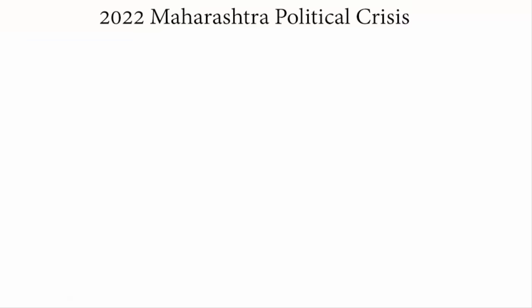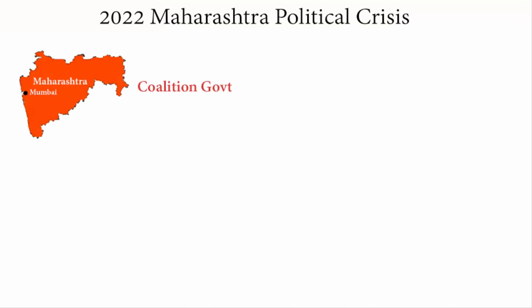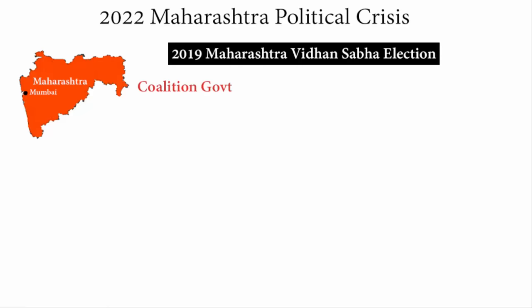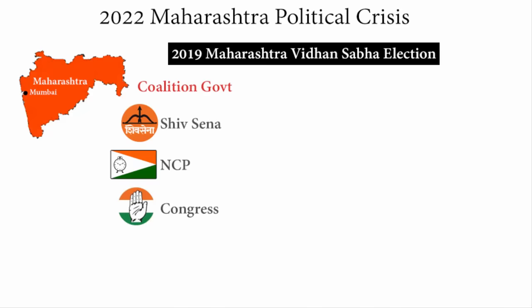As you may know, in Maharashtra we have a coalition government. A coalition government is formed with a minimum of two political parties or more. So three main political parties of India have together jointly formed the Maharashtra government in 2019. There are also some smaller political parties and independent candidates who have extended their support to this coalition government.